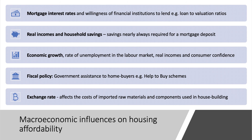Fiscal policy can have a big effect on the housing market, particularly government assistance to home buyers such as the Help to Buy scheme. The exchange rate is also a macro factor — a fall in the pound and depreciation of sterling would increase the cost of imported raw materials and components like steel and cement, causing house prices to rise and making housing less affordable. Choose your macroeconomic influence and develop a chain of reasoning explaining it.